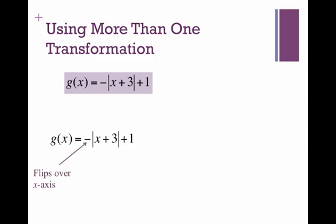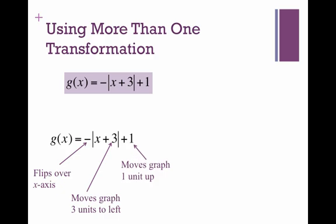The negative flips our v absolute value over the x-axis, the plus 3 moves the graph 3 units to the left, and the plus 1 moves our graph up 1 unit.